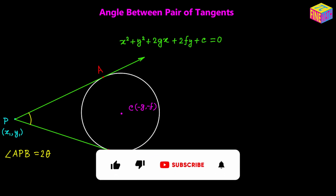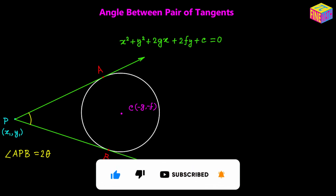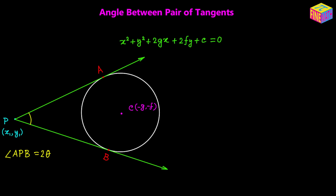The location of the center would be at negative g, negative f. Let's assume that the equation of the circle is given and also that the coordinates of an external point P are given. In this case, I have assumed the coordinates to be x₁, y₁. So essentially two things are given: the equation of the circle and the coordinates of the external point P.